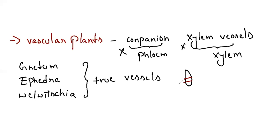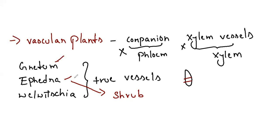Most gymnosperms are trees, but some are shrubs — Ephedra is a shrub. Some are woody climbers; Gnetum is a woody climber. Welwitschia is a special shrub that bears only two leaves for its entire lifespan. These are the specialities and exceptions regarding xylem vessels in gymnosperms.